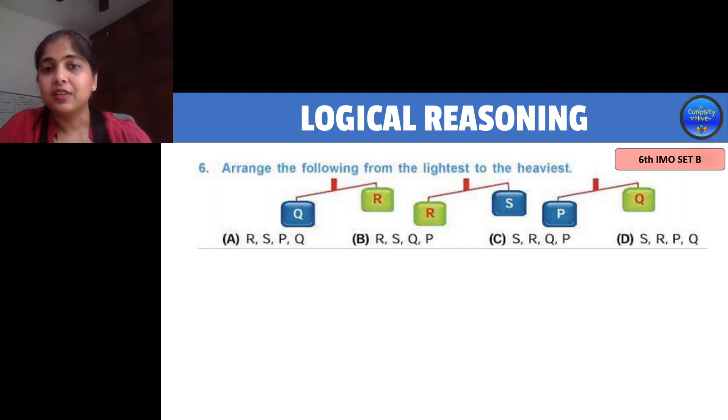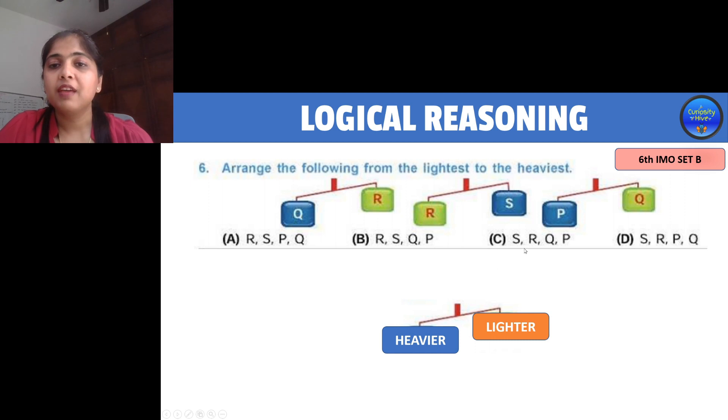Let's take the next question. In this question, the important part is that in a balance, the lower hanging side is the heavier side and the upper hanging side is the lighter side. If you look at these balances, there is only a single block which is S on the upper side, hence it is lightest, and P is only shown on the lower hanging side, hence it is the heaviest. We are asked to arrange them from lightest to heaviest. Select that series which has S in the first spot and P in the last spot, which is option C.